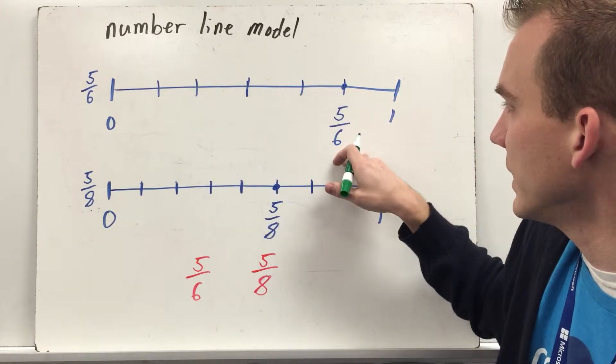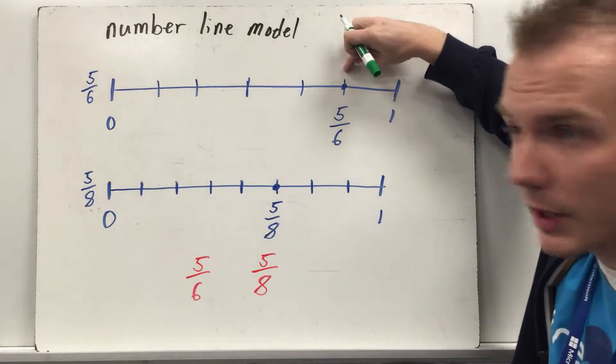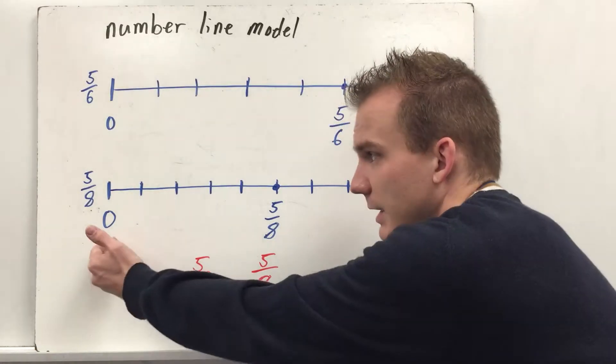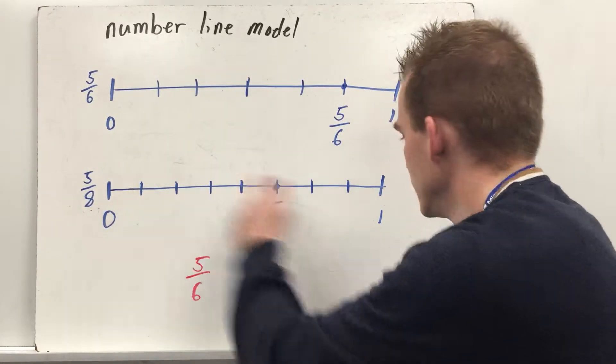Six equal parts, and we're looking at five-sixths, which is here on the number line. Then you have down here eighths, five-eighths. So I have zero and one.